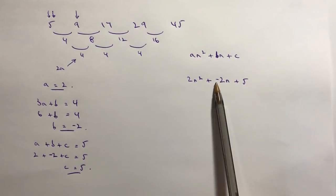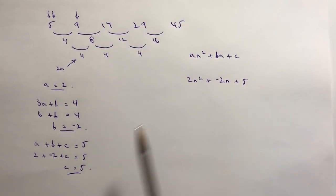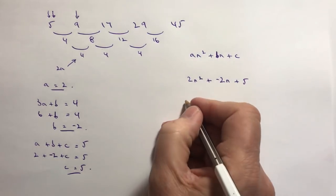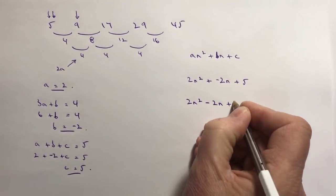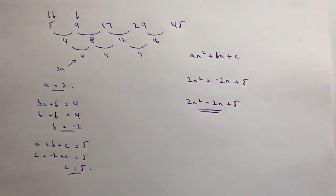Just need to tidy that up a little bit here, it doesn't look quite right. A plus and a minus together we make those two into a minus. So the answer to the question is 2n² - 2n + 5, and that will be the answer to this particular question.